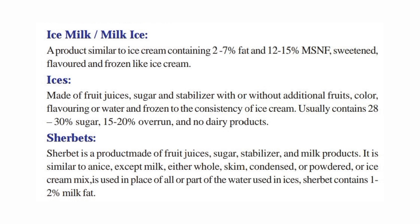Next is ice — it is made of fruit juice, sugar and stabilizer, with or without additional fruits and fresh fruits, flavor. Next is sherbet — sugar is made of fruit juice, sugar, stabilizer and milk. The milk content is 1–2% milk.